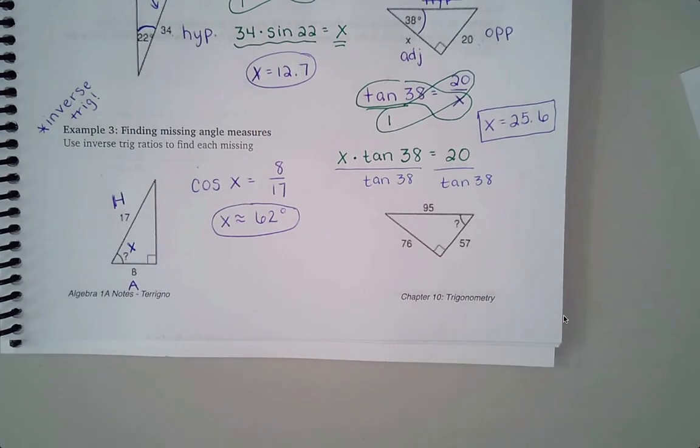So one more quick one here, this third one, same deal, except this time you're given all three sides. So how do you pick which trig ratio to use? Well, it doesn't really matter. You could do sine, cosine, or tangent. You just pick your favorite.